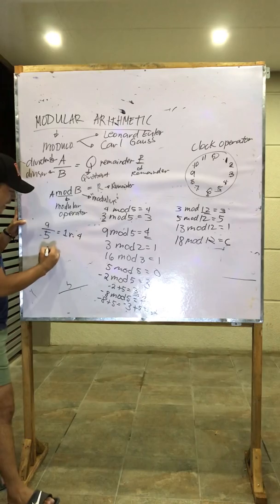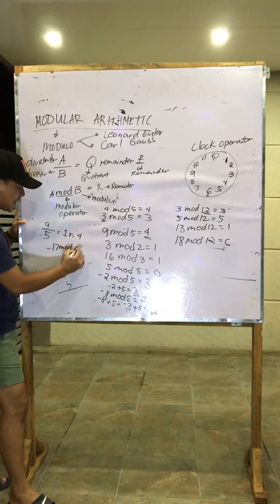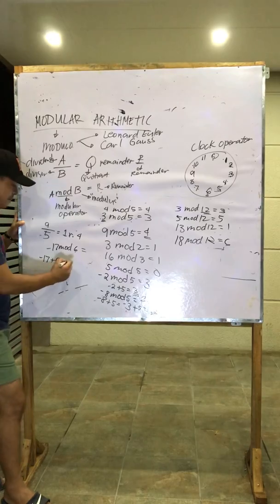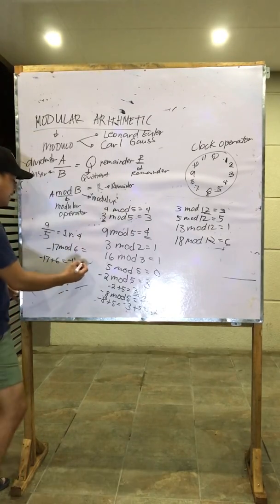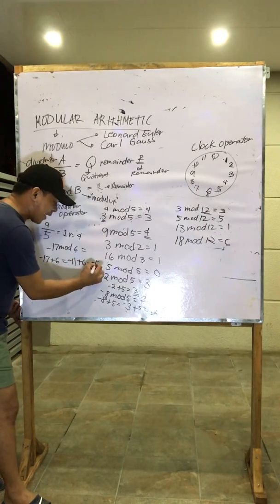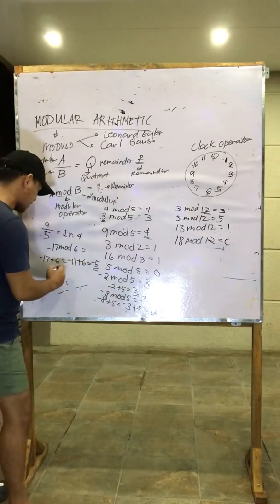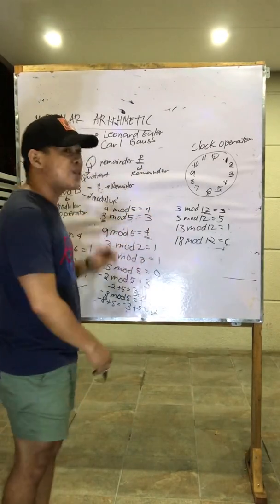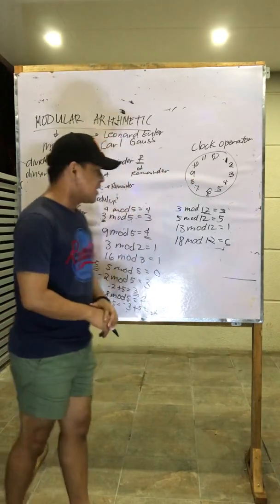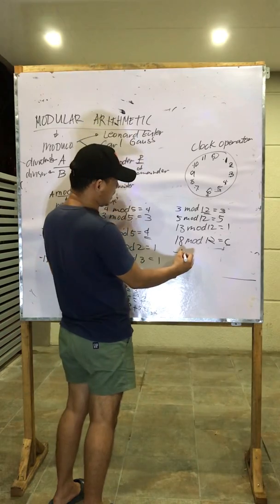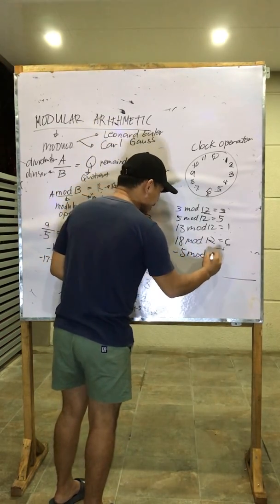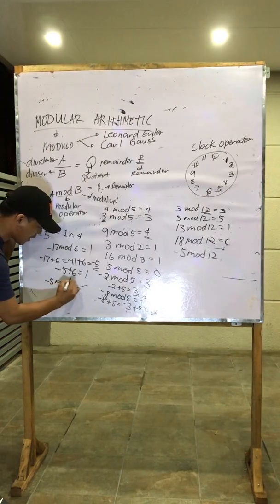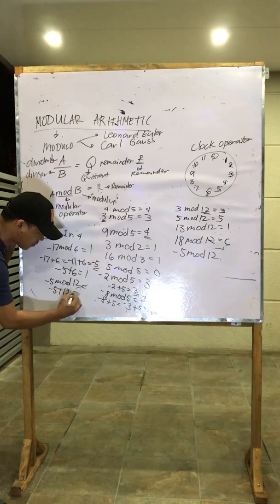Another example: negative 17 mod 6. Negative 17 plus 6 is negative 11 — not yet positive. Continue: negative 11 plus 6 is negative 5 — still negative. Continue: negative 5 plus 6 is equal to 1. Therefore, negative 17 mod 6 is equal to 1. Now let us use the clock operator for negative 5 mod 12.